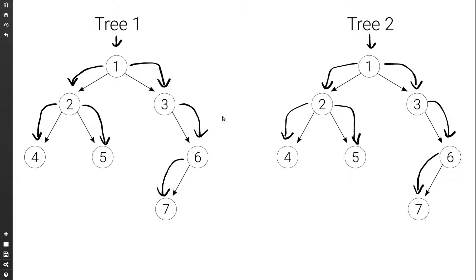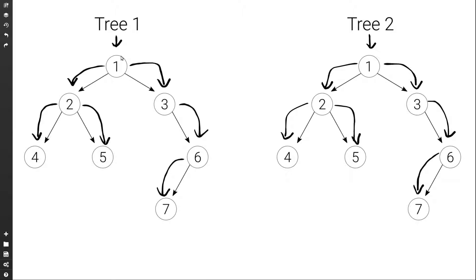On the other hand, if at any point we found two nodes which were not equal — say if this was an 8 — once the values of the two nodes were not equal we would directly return false. Or if we had an extra node, when we move to the right of 7 we would have a node on one side but null on the other, so they would not be equal and we would return false. This works even when the two trees are not equal because at any point where we find that they diverge we would return false and determine that they are not equal.